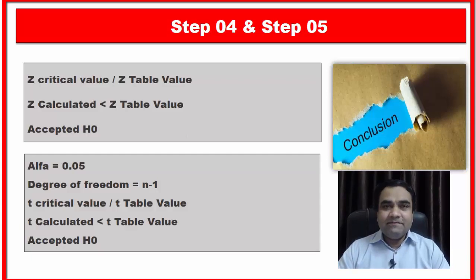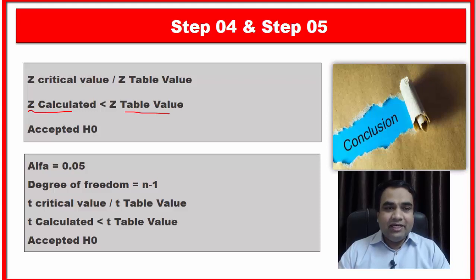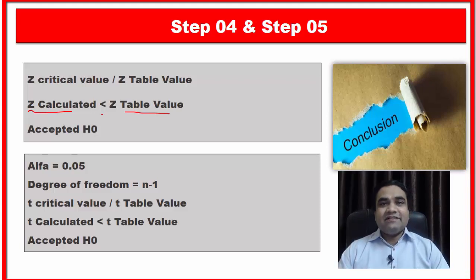In the fourth and fifth steps, you compare your calculated value with the critical value and the table value. Now look at the screen. Suppose you have calculated the z value and you have the z table value. If your z calculated value is less than the z table value, then you accept the null hypothesis. If the z calculated value is greater than the z table value, then you reject the null hypothesis.